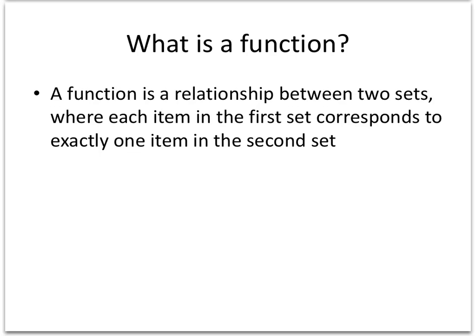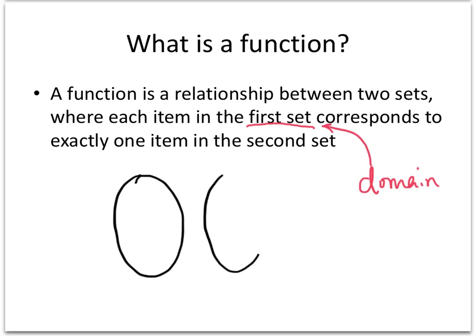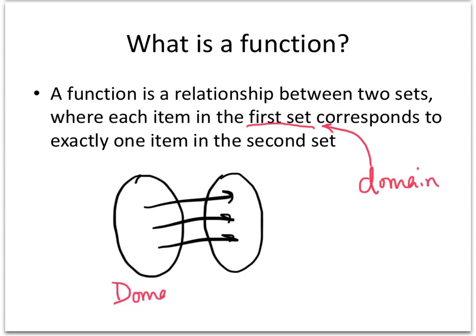That first set is what we call the domain. The domain is the first bubble, if you're thinking about our bubble and arrow diagrams. We've got a bubble on the left and a bubble on the right, with arrows going from the left-hand bubble to the right-hand bubble. That bubble on the left — that's the domain.